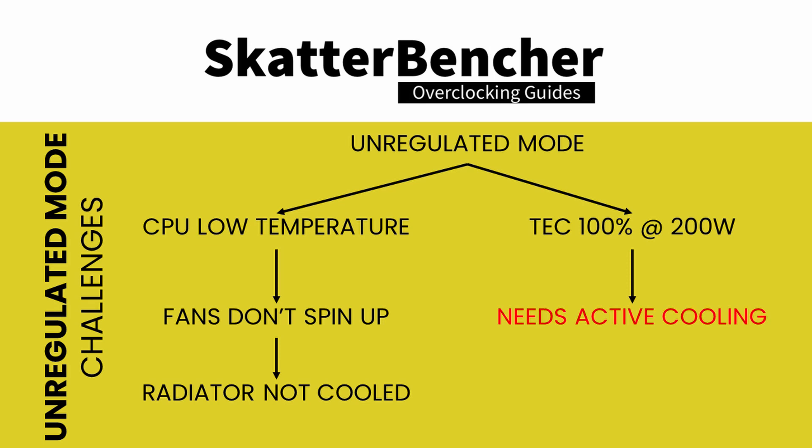So this creates a problem. On the one hand, we're adding heat in the loop because of unregulated mode, and on the other hand, the fans are not spinning up also because of unregulated mode. This can potentially get out of hand. With our configuration, we make sure that the water temperature is monitored during unregulated mode and action is taken if the water temperature increases too much. Now let's move on to our first overclocking strategy.